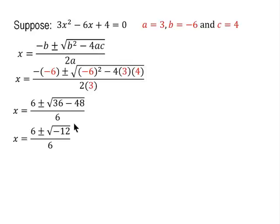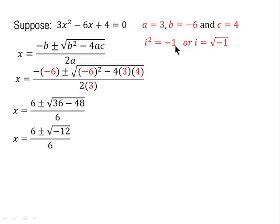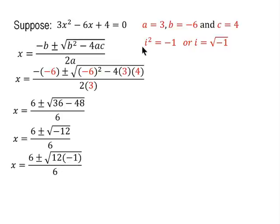Based on this, we can conclude that we don't have real number solutions, because we have a negative number inside the square root, which is undefined in real numbers. So we proceed using imaginary or complex numbers. Recall that i² = -1, or equivalently i = √(-1). We factor the radicand: √(-12) = √(12 · (-1)). We substitute -1 as i².